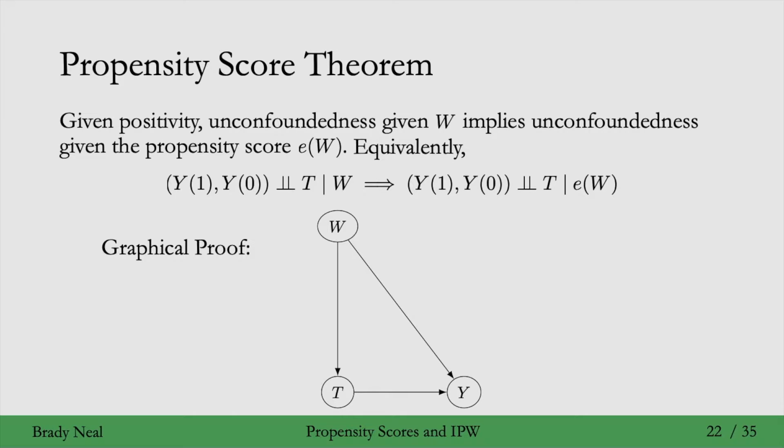This edge from W to T is the causal mechanism that we can write as just this conditional distribution, P(T|W). Now, if T is binary, this isn't key to the argument, but if T is binary,